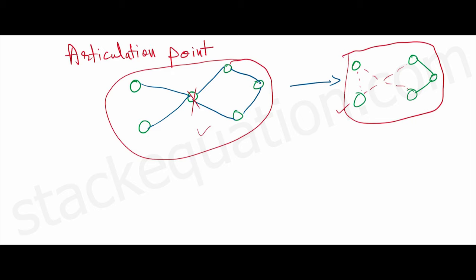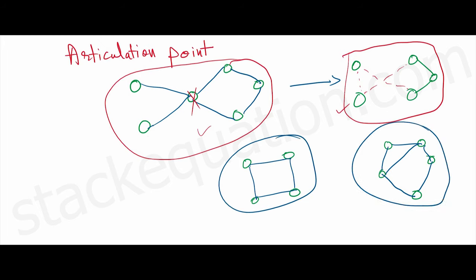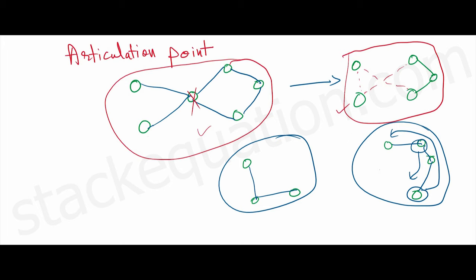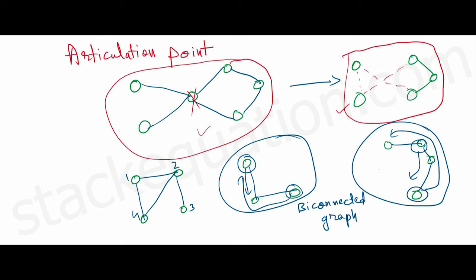Similarly, if there exists a graph where removing any vertex will not disconnect it — graphs like this where if I remove any vertex, let's say this one or this one, it won't really disconnect the graph completely. I can still reach from this vertex to this vertex or this vertex to this vertex. Such graphs, where removing any vertex doesn't disconnect the graph, we call them bi-connected graphs.